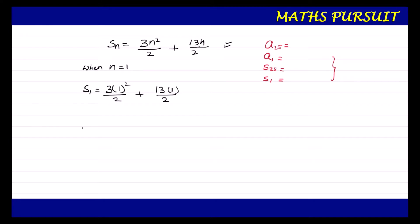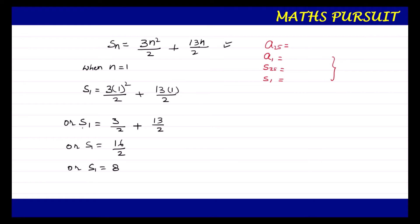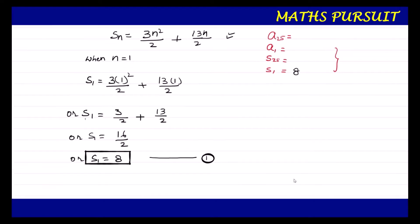So S1 = 3 upon 2 plus 13 upon 2 = 16 upon 2, which gives us S1 = 8. We are able to quickly find out the value for S1. Let us call this equation number 1. Now let us move ahead and find out the value for S25.